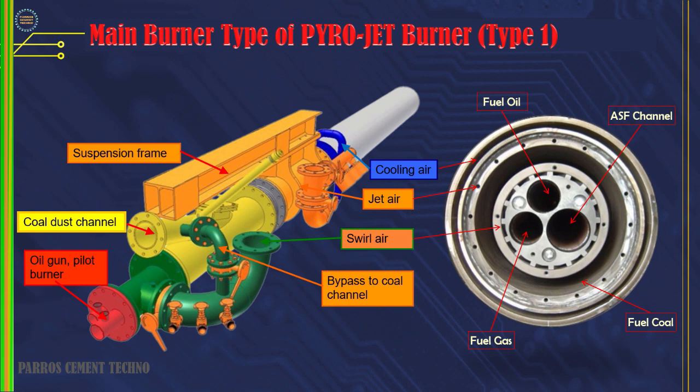This is a PyroJet burner. This type of burner uses a roots blower separately for axial and radial air, so they do not affect each other. This is different from burners that use only one fan for axial and radial air. Primary air pressure reaches 800 mbar for axial air, and 150 to 250 mbar for radial or swirl air.